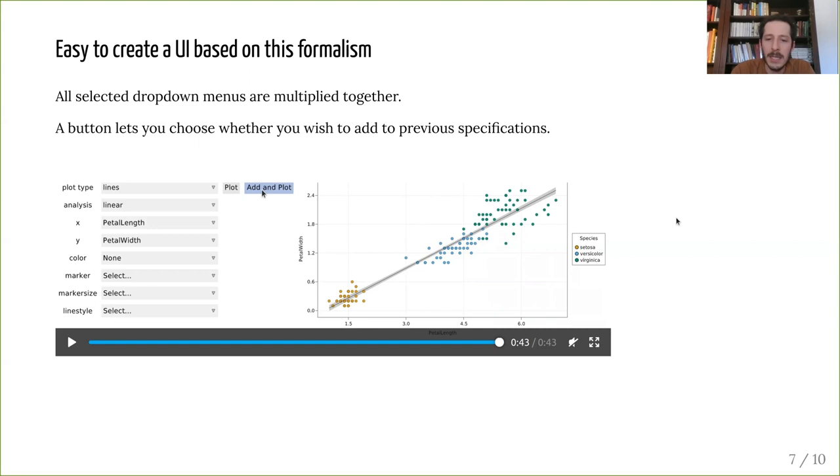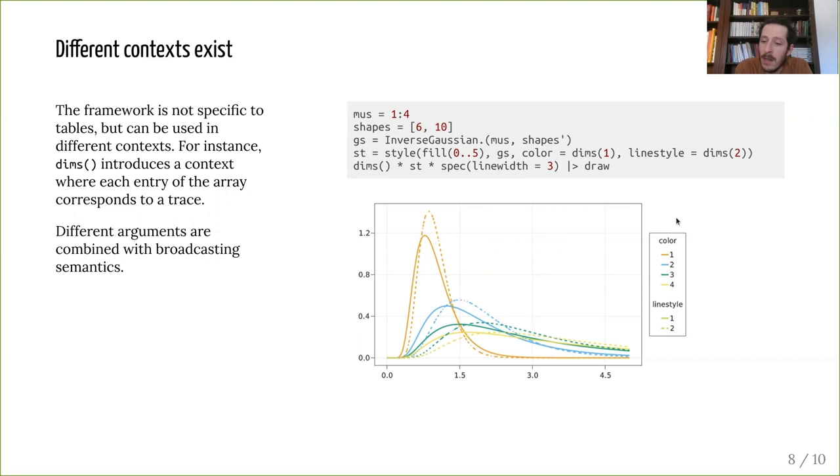The tabular data is one context that we have used so far, but it's only one of many. For example, another natural data structure in Julia are multidimensional arrays, and I think it should be easy to plot starting from those as well, just like plots does. And here, for example, the keyword dims creates a novel plotting context where the key data is no longer tables, but arrays that are combined together with broadcast semantics, and every element of the array is a trace.